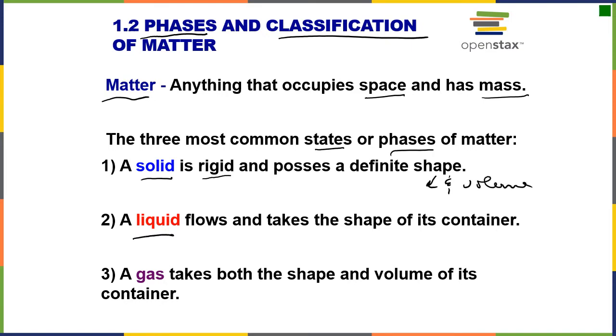A liquid flows and takes the shape of its container, so it has a definite volume but an indefinite shape. A gas has neither a definite shape or volume - it takes the shape and volume of its container.